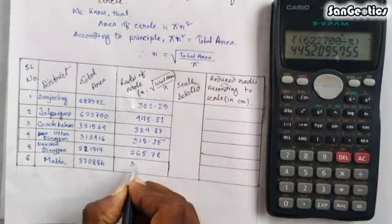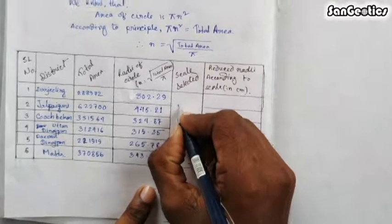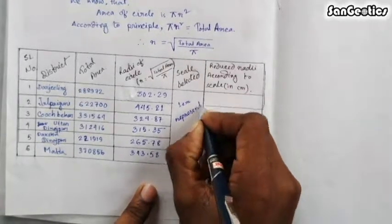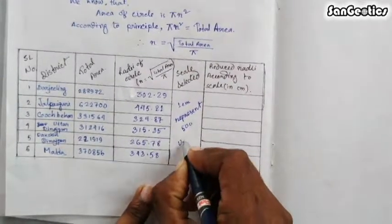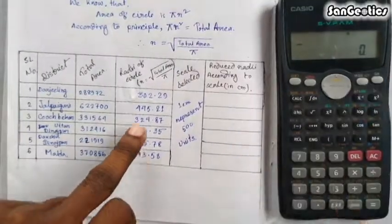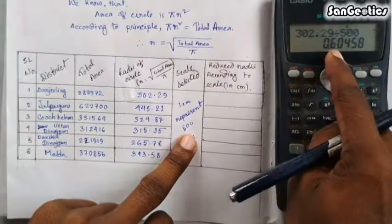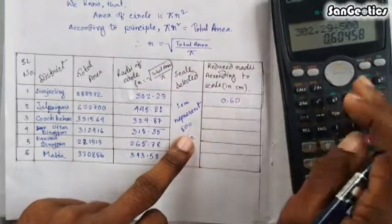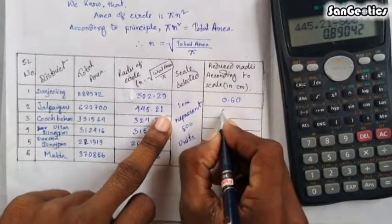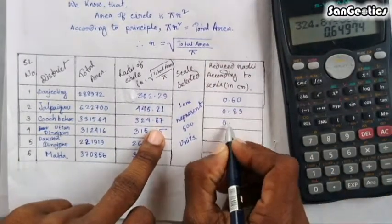The next caption is scale selected. The scale will be selected on the basis of your map size. Here I am selecting one centimeter to represent 500 units. So the reduced radius according to scale will be 303.29 / 500 = 0.60; next, 445.21 / 500 = 0.89. Similarly, calculate the remaining reduced radii.